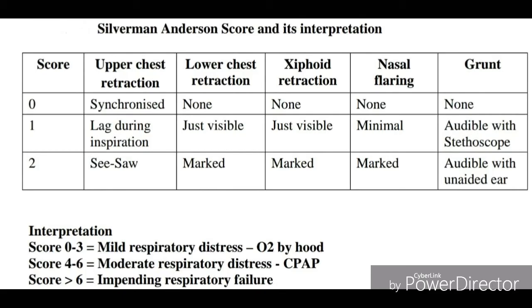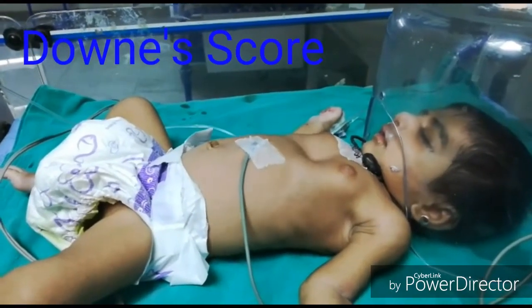If the total score is between 0 to 3, we label it mild respiratory distress and the baby can be managed with oxygen by hood or nasal prong. If scores are between 4 to 6, the baby has moderate respiratory distress and requires continuous positive airway pressure (CPAP). If scores are more than 6, impending respiratory failure is present and the baby requires ventilatory support. If the score is 10, we label it severe respiratory distress. The Silverman-Anderson scoring system is mainly helpful for preterm babies with respiratory distress syndrome.